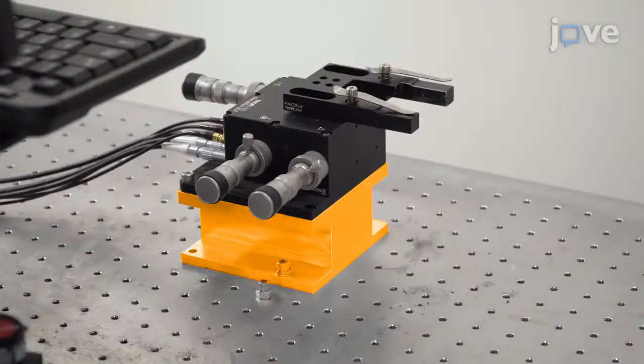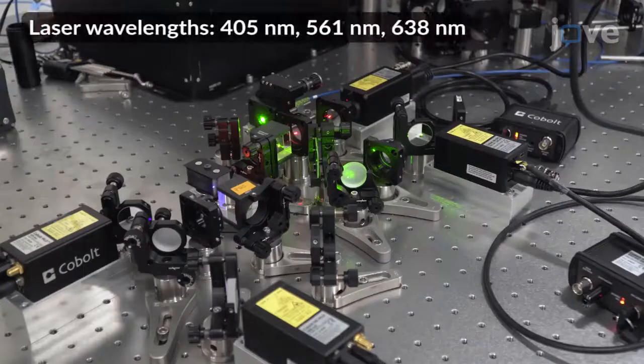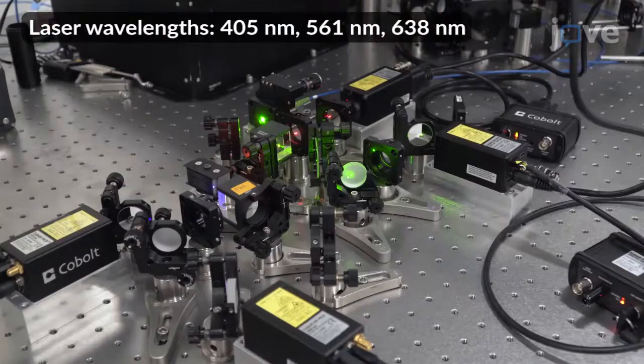Mounted on an aluminum block is a microscope body with a piezo stage and sample holder. Also on the bench are three lasers and optical elements to combine the beams.